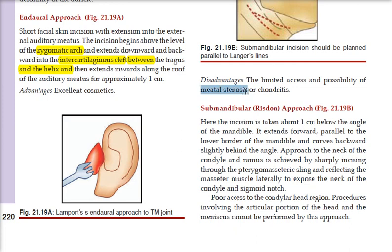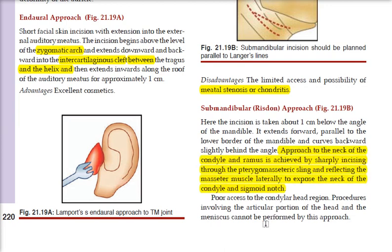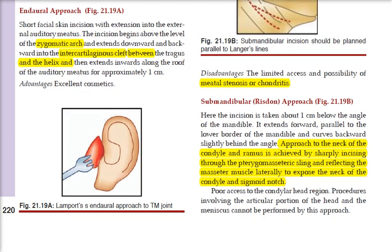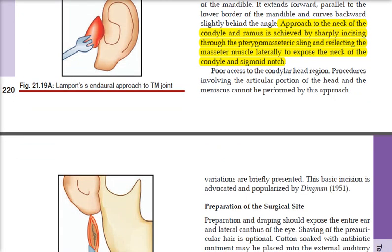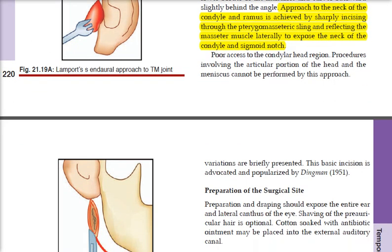For the sub-mandibular approach, the incision is placed 1 cm below the angle of the mandible, extending parallel to the lower border of the mandible and backwards slightly behind the angle. This provides access to the neck, condyle, and ramus via a sharp incision, reflecting the pterygomassetic sling and masseter muscle to expose the neck up to the condyle and sigmoid notch. However, there is poor access to the condylar head region, and procedures involving the articular surface and meniscus cannot be performed by this approach.